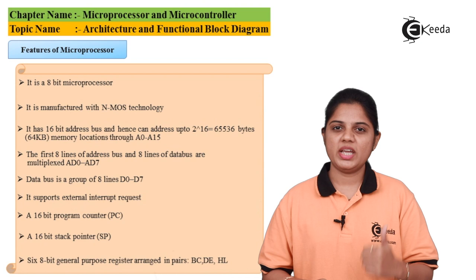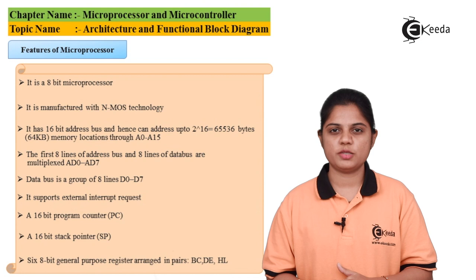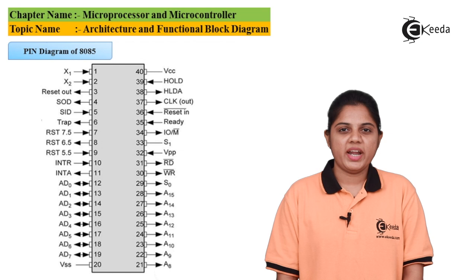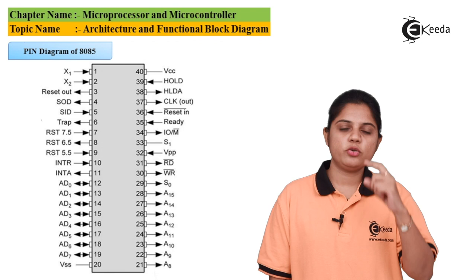We have two different external interrupts available. There is one 16-bit stack pointer, denoted by SP, and a 16-bit program counter, denoted by PC. These are the two external interrupts available. Looking at the pin diagram of the 8085, as explained, it has two different clock cycle pins denoted by X, which are used to provide clock pulses.